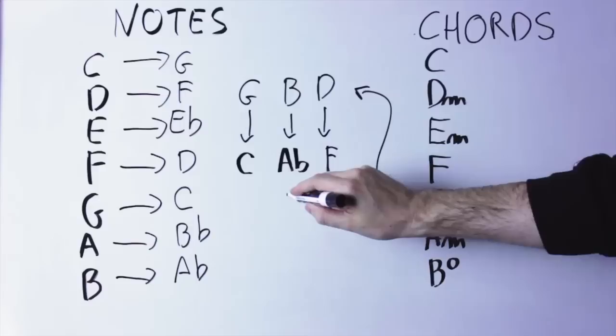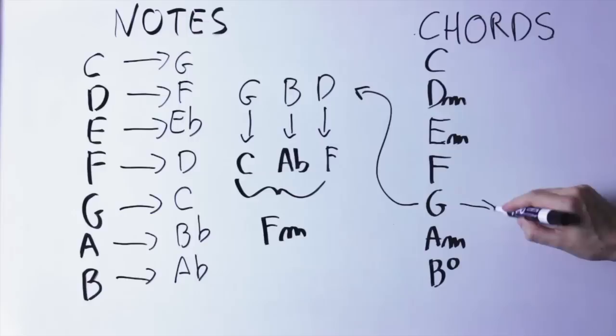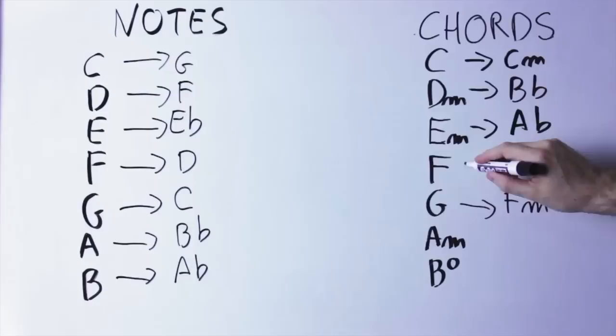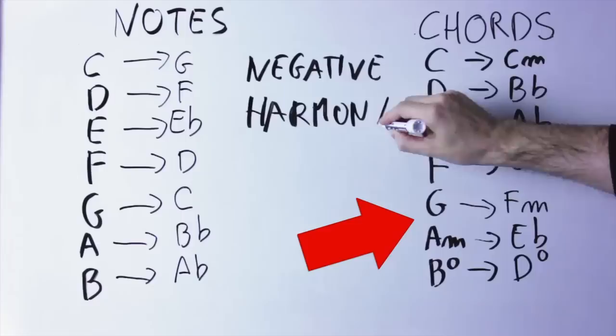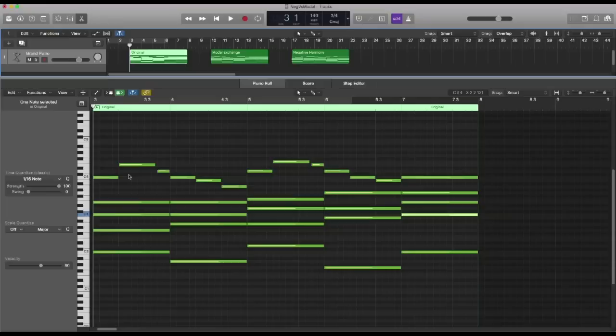Just by doing this, the chords change too. For instance, if we take the G major chord — made by the notes G, B, and D — we change it note by note: G becomes C, B becomes A flat, D becomes F. We take those three notes, which are F, A flat, and C, and now we see that the G chord has been transformed into an F minor chord. We do exactly the same with all the other chords. I already explained in my previous video why we do it this way, so I refer you to that if you want to know more.